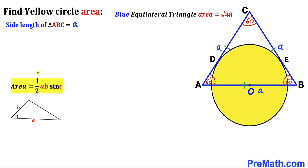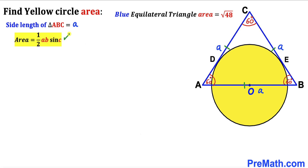Now let's recall the area of a triangle formula: area equals one half times A times B times sine of angle C, where A and B are the side lengths and C is the angle between them. In our case, our two side lengths are A and A, and the angle between them is 60 degrees. The area has been given to us as square root of 48, so: √48 = ½ · A · A · sin(60°).